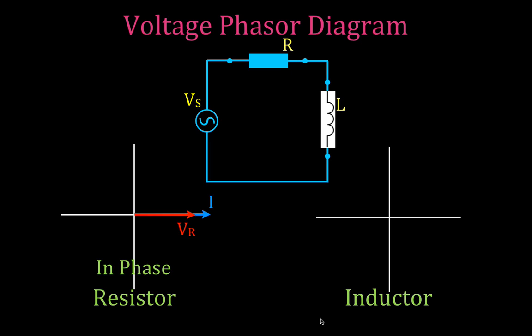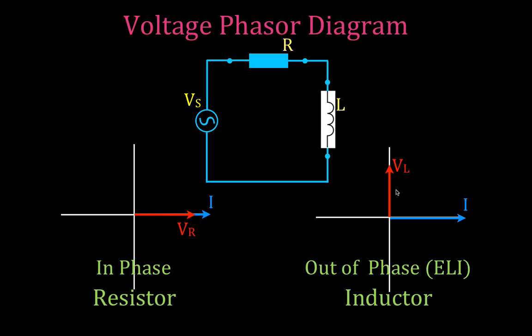Now, if we have a purely inductive circuit, we know that the voltage and the current are out of phase, and we use this simple device, ELI, to help us remember that for an inductive circuit the voltage leads the current. That means we draw the vector for the current along the positive x-axis. Because the voltage leads the current, we draw the vector representing the voltage across the inductor on the positive y-axis. The voltage leads the current, and the phase angle between those is 90 degrees.